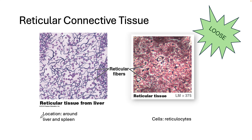Reticular connective tissue is our third type of loose connective tissue, found in the walls of organs such as the liver and spleen. It contains a lot of reticular fibers, which form a mesh to help support and hold the organs together. You don't really see a lot of collagen fibers in this type of tissue. The cells in reticular connective tissue are called reticulocytes.